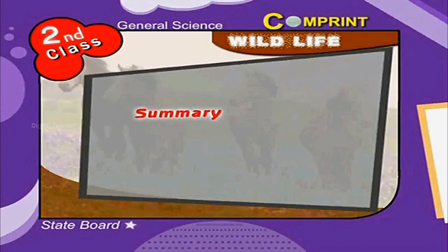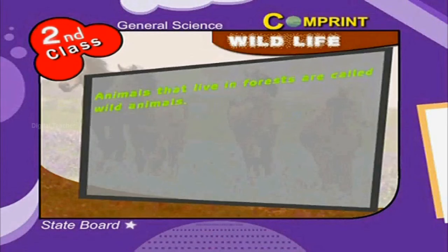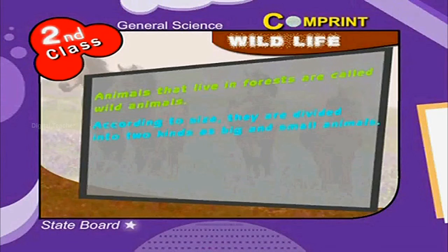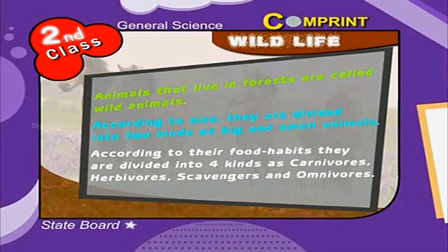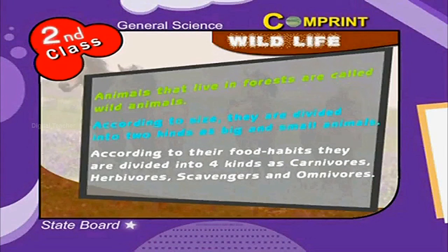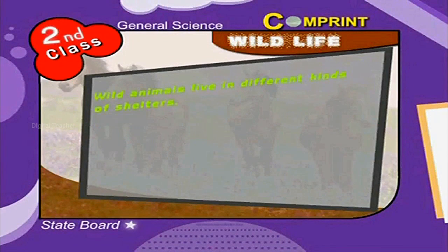Let us summarize. Animals that live in forests are called wild animals. According to size, they are divided into two kinds: big and small. According to their food habits, they are divided into four kinds: carnivores, herbivores, scavengers, and omnivores. Wild animals live in different kinds of shelters.